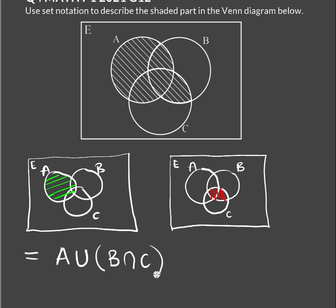Notice the brackets here give us the order in which we should perform the shading if we were to go backwards. If we write A union B intersection C without any brackets, we'd be talking about something different. So it's important that when writing set notation, we first identify which two parts our question can be split into, then write a complete set notation.